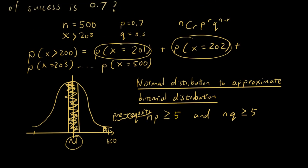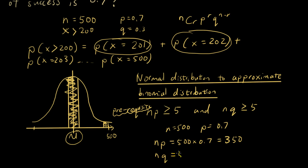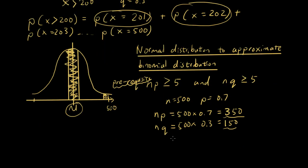Let's do our check. We have n equal to 500 and p equal to 0.7, so n times p is 500 times 0.7, which is 350. And n times q is 500 times 0.3, which is 150. Both of these numbers are bigger than or equal to 5, which means we are allowed to use normal distribution to approximate binomial distribution. Once we know we're allowed, we can find the mean using this formula, which is n times p — so the mean is simply 350.